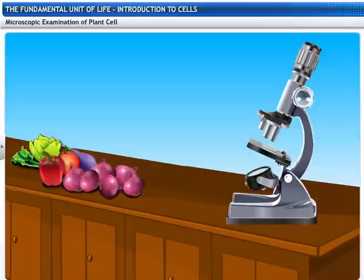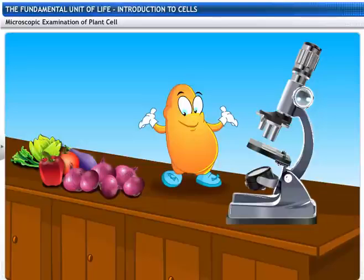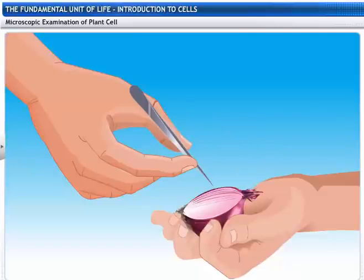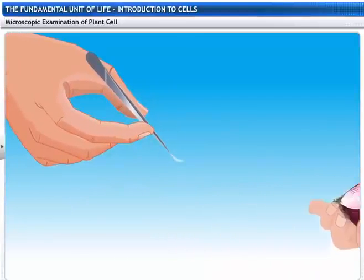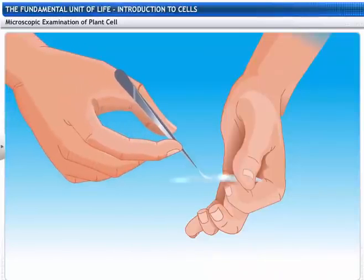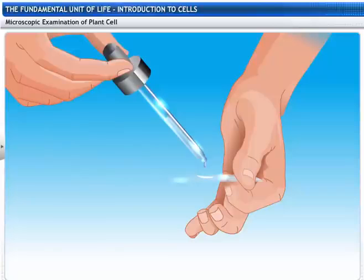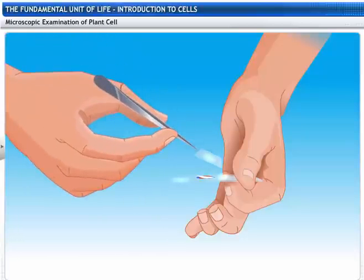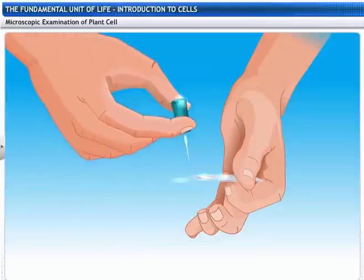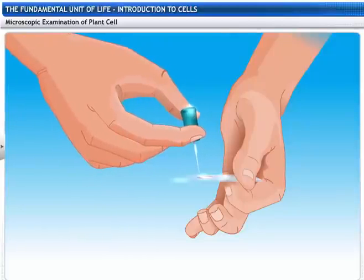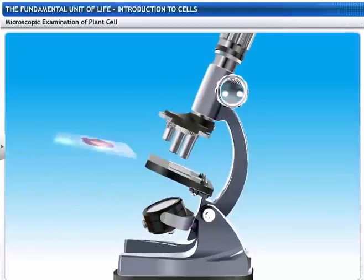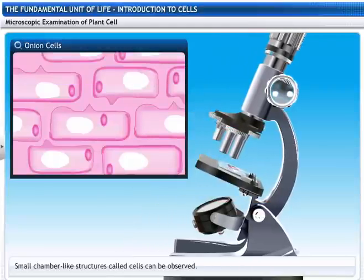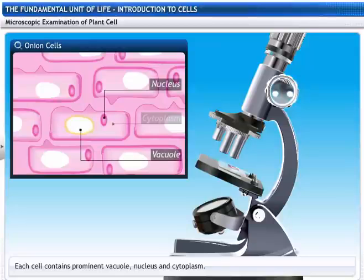Let's do a microscopic examination of a plant cell. Here's an onion. We'll begin by cutting it into halves. Peel off the thin inner layer using forceps. Spread the thin peel on the glass slide. Put a drop of water on it. Add a drop of iodine solution to it. Place a cover slip on it. Tap gently with a needle on the cover slip to remove air bubbles. Place the slide on the stage of the microscope. Small chamber-like structures called cells can be observed. Each cell contains a prominent vacuole, nucleus and cytoplasm.